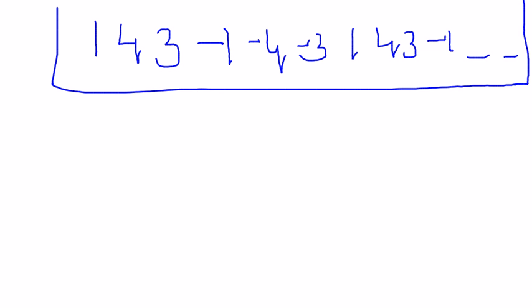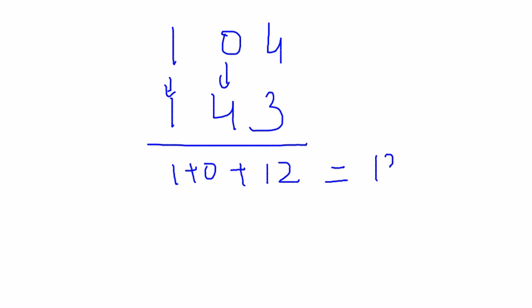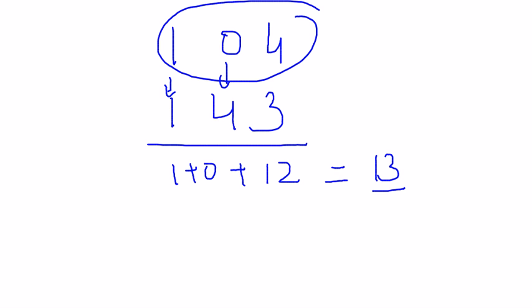Let's start with an example. Suppose the number is 104. The pattern was 1, 4, 3. Now multiplying the corresponding digits of the pattern with the corresponding digits of the number: 1 cross 1 gives 1, 4 cross 0 gives 0, plus 3 cross 4 gives 12. So this comes out to be 13. Since 13 is exactly divisible by 13, we conclude that 104 is perfectly divisible by 13.